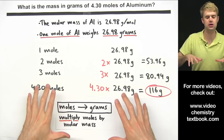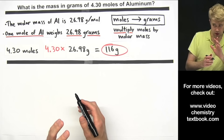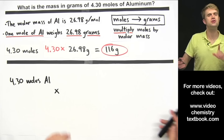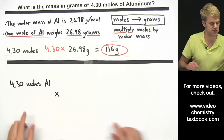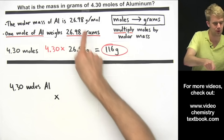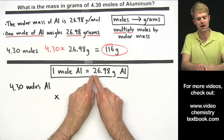Now I want to show you how we can solve the same problem with conversion factors, because teachers and textbooks often use this method. Starting with 4.30 moles of aluminum, we want to multiply by a conversion factor that gets rid of moles and converts them into grams. To write conversion factors, we look at an equivalence or relationship — in this case, one mole of aluminum equals 26.98 grams of aluminum.